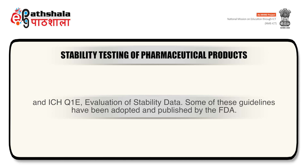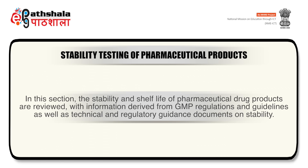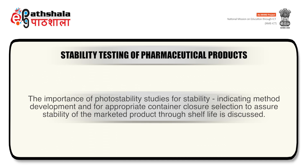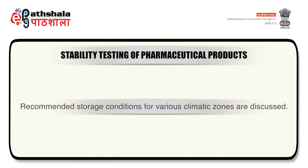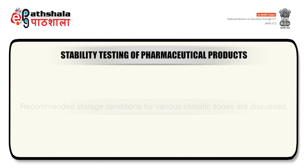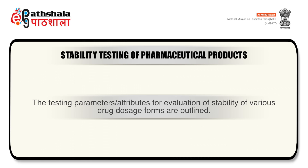Some of these guidelines have been adopted and published by the FDA. In this section, the stability and shelf life of pharmaceutical drug products are reviewed and information derived from GMP regulations and guidelines, as well as technical and regulatory guidelines documents on stability. The importance of photostability study for stability-indicating method development and for appropriate container closure selection to assure stability of marketed products through shelf life is discussed. Recommended storage conditions for various climatic zones are discussed. The testing parameters for evaluation of stability of various dosage forms are outlined.